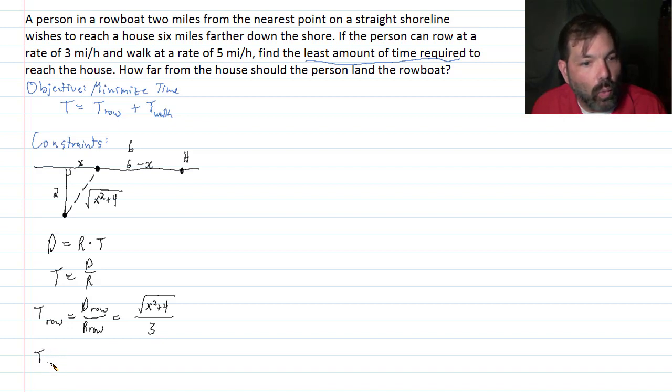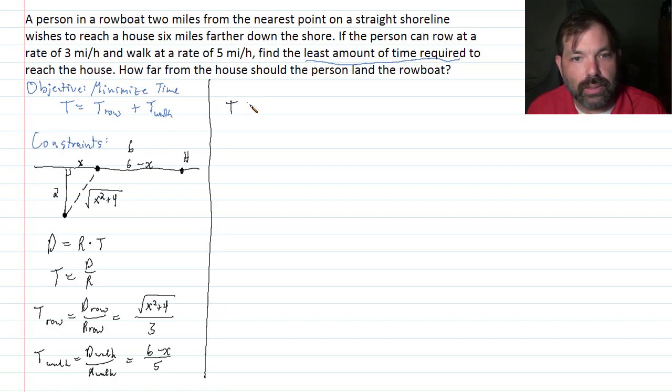Similarly, the time walking can be thought of as the distance walking divided by the rate while walking. The distance while walking is six minus x, and the rate is five. So now, using all of that, I can take my objective function and replace the time rowing and the time walking with those other expressions. So I can now write the time as a function of x, and it's going to be equal to the time rowing. That's the square root of x squared plus four over three. And the time walking is six minus x over five. And now, I can use some calculus to analyze this.